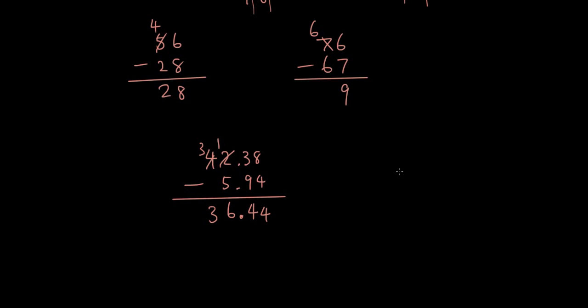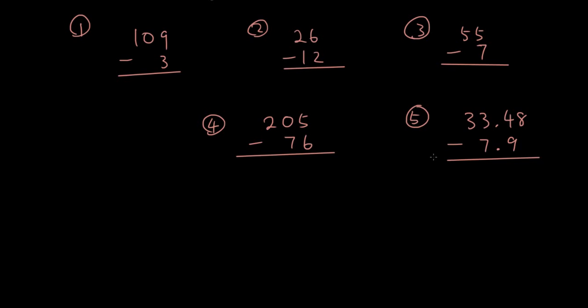Let's just give you guys a series of questions and you can try it out. Try these questions out and come back when you're done. 9 minus 3 is 6, 0 minus nothing is 0, 1 minus nothing is 1. 6 minus 2 is 4, 2 minus 1 is 1. 5 minus 7, borrow 1 from the next digit. So now it's 15 minus 7, which is 8. 4 minus nothing is 4.